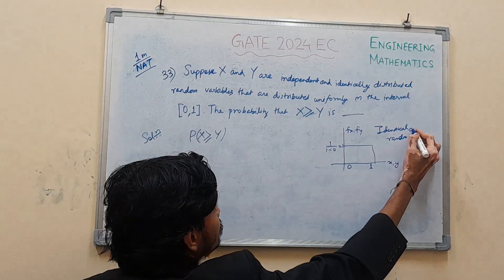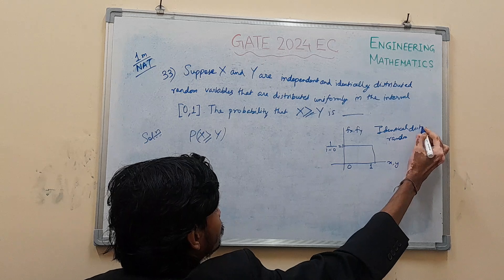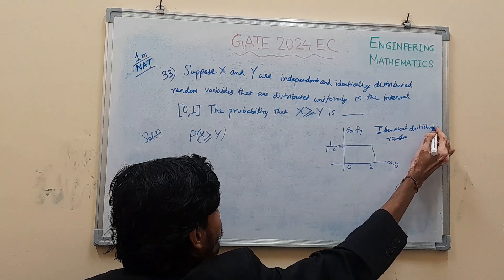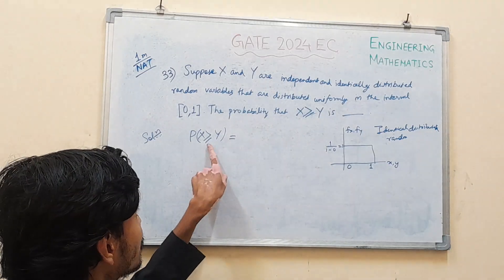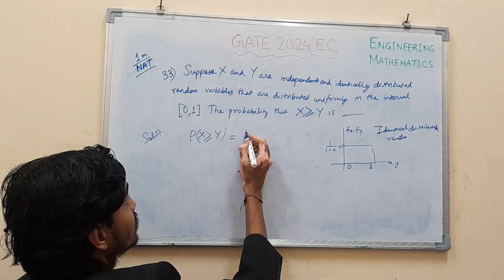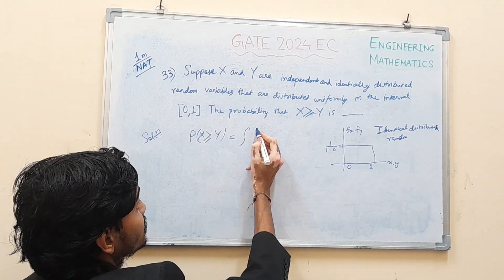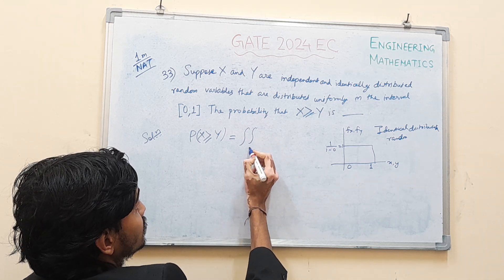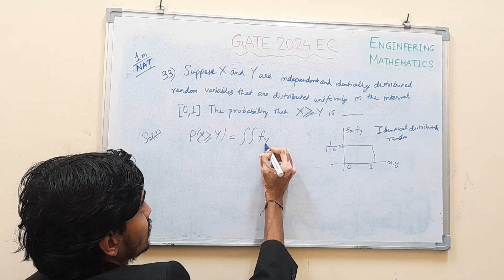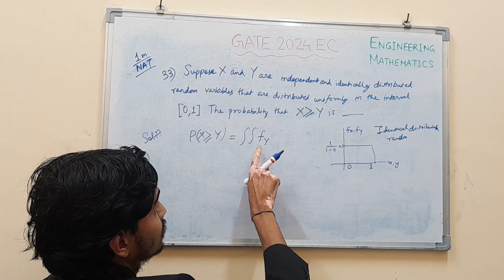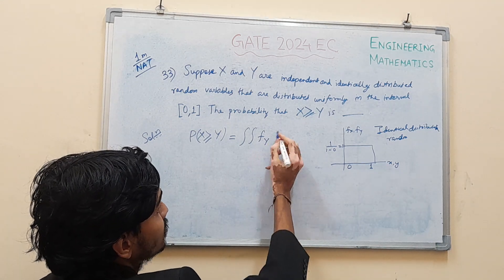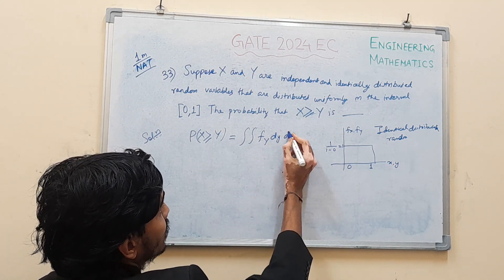Basically, the required probability of X greater than equal to Y. We'll use double integration. The integral will be f of y, the probability density function of y, dy, and then dx.